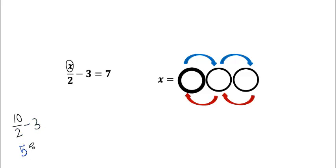10 divided by 2 is 5, 5 minus 3 is 2. So the answer is not 10. But if we know the answer, we can plug it in, and we should get the same number on both sides.